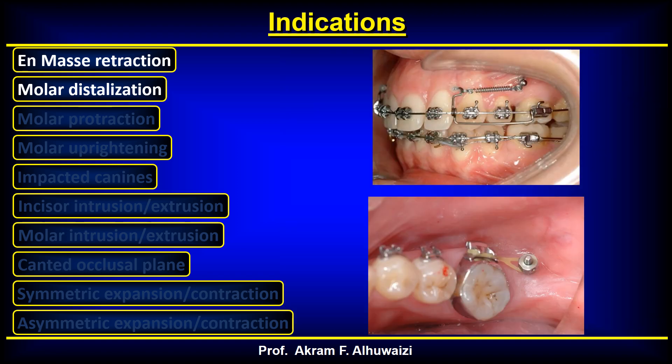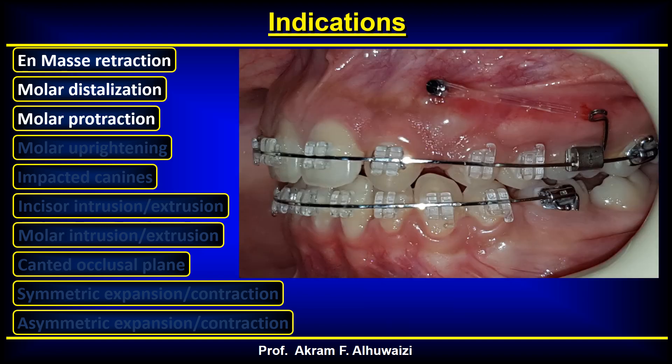Two other techniques include a retraction jig, where the jig passes around the wire and comes up so that when you pull it back, the force is transferred only to the molar, retracting it backwards. The last technique is placing the TADS in the retromolar area and retracting the tooth directly without the use of wires. However, be careful as this can rotate the molar, so it needs careful observation.